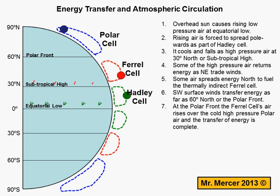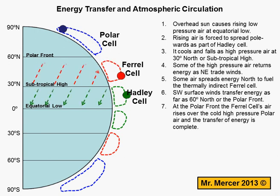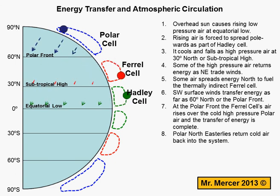At the polar front, some of the energy is transferred to the polar cell, where it's displaced by cold, dense air returning from the poles. It's at this point that the transfer of energy from the equator to the poles is pretty much complete. The only remaining thing to mention is the surface winds returning from the pole — these are called northeasterlies, and they return cold air back into the system.